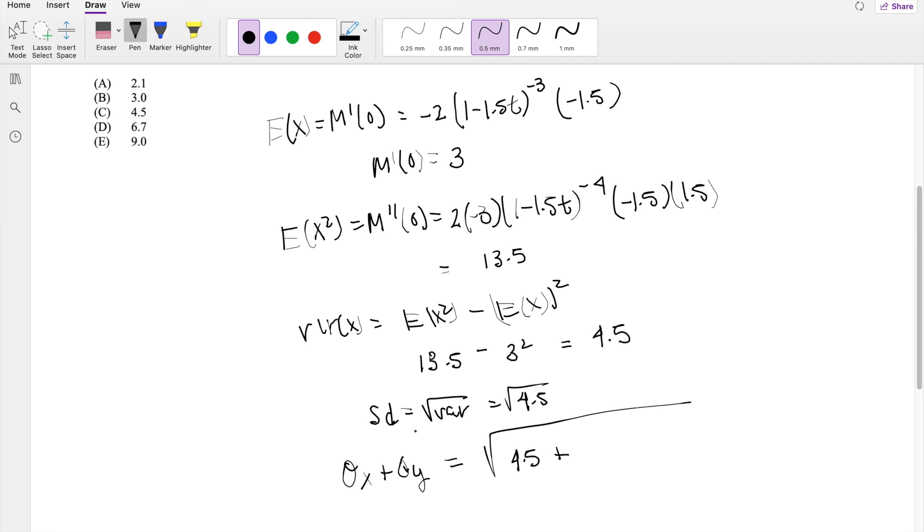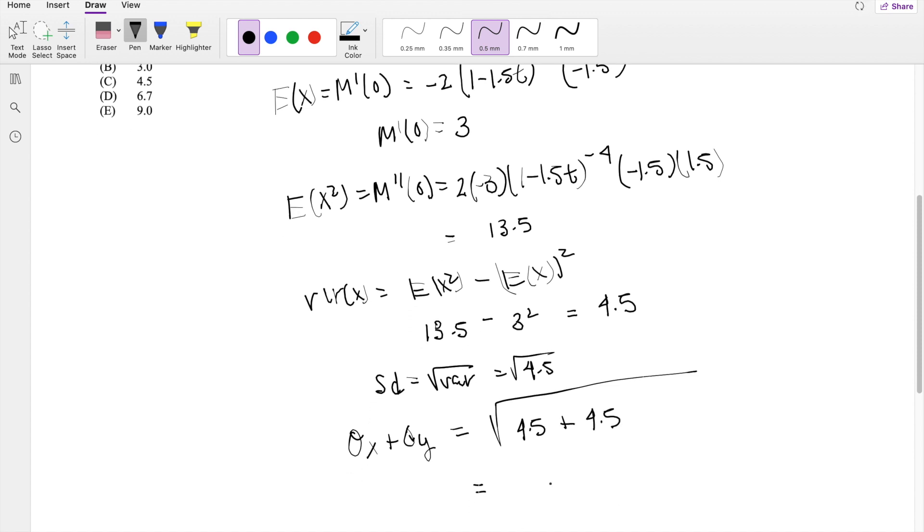...plus 4.5, because they're identically distributed so they have the same variance. So this is the variance, equal to square root of 9, which is equal to 3.